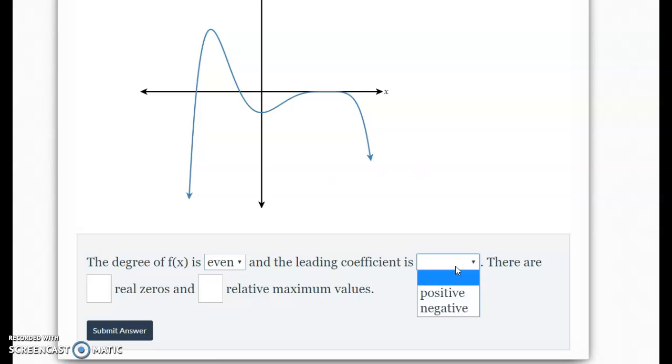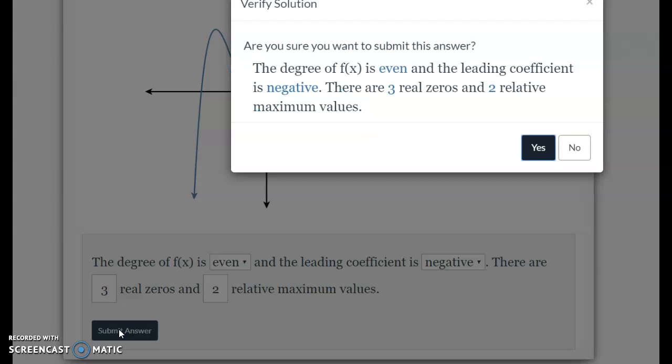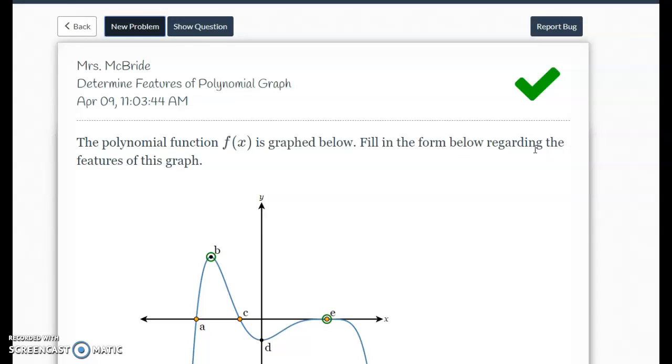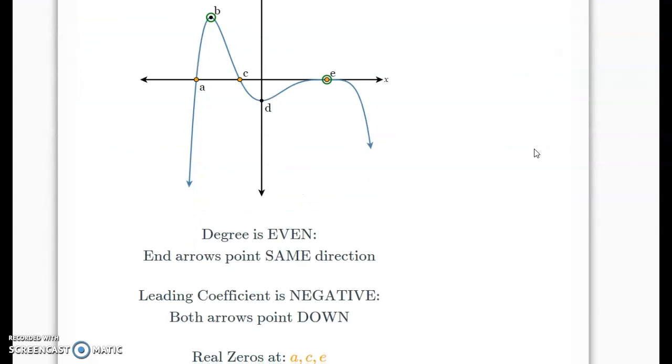Since they're even and going down, the leading coefficient is negative. The real zeros are the number of times it hits the x axis, so that is three. And this has two maximums. There we go.